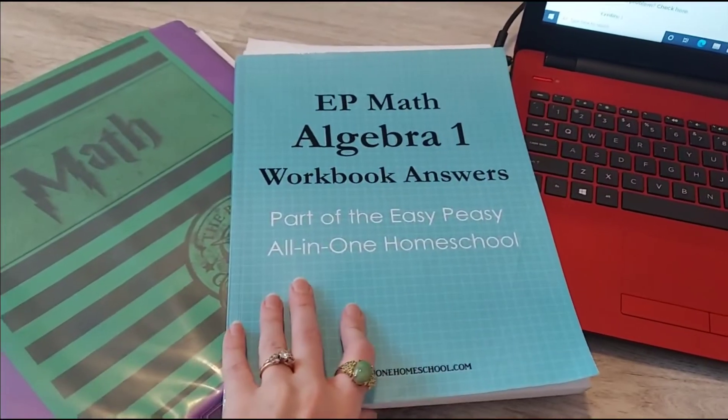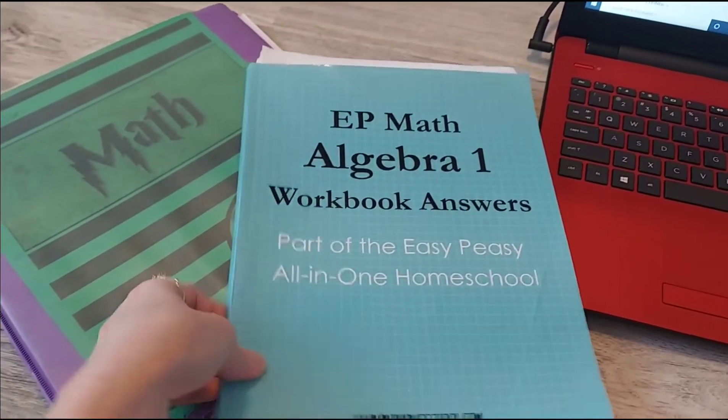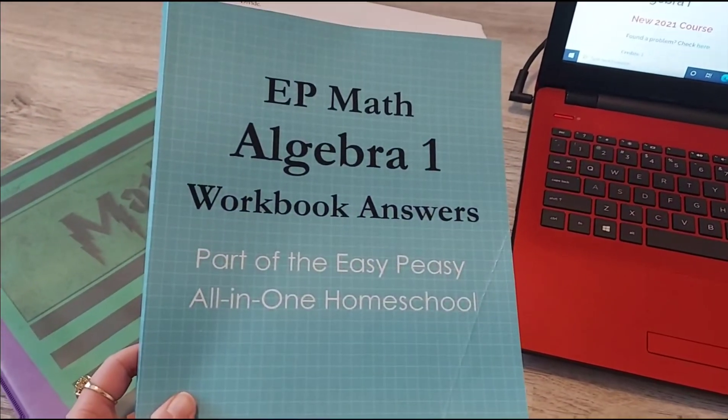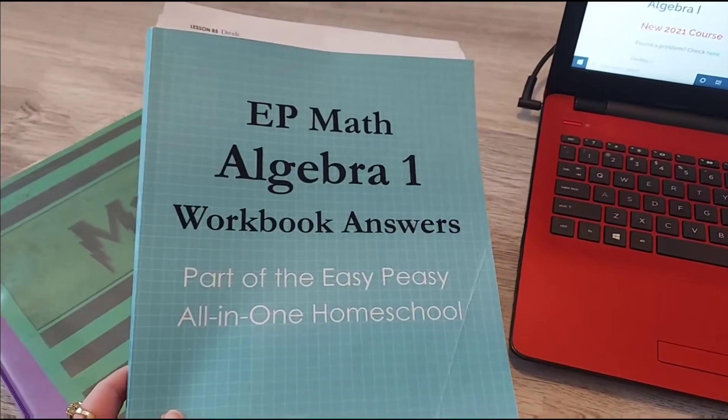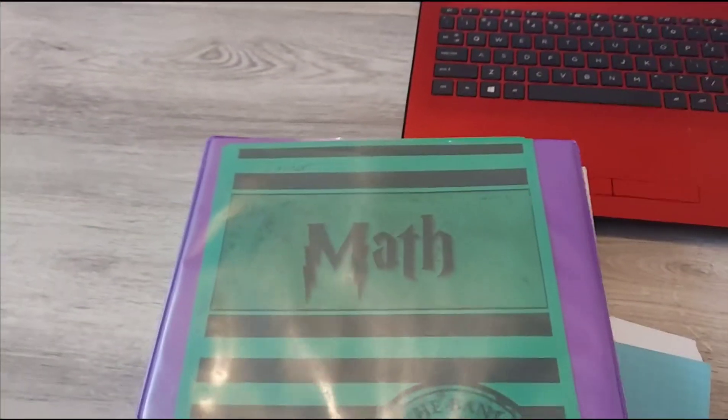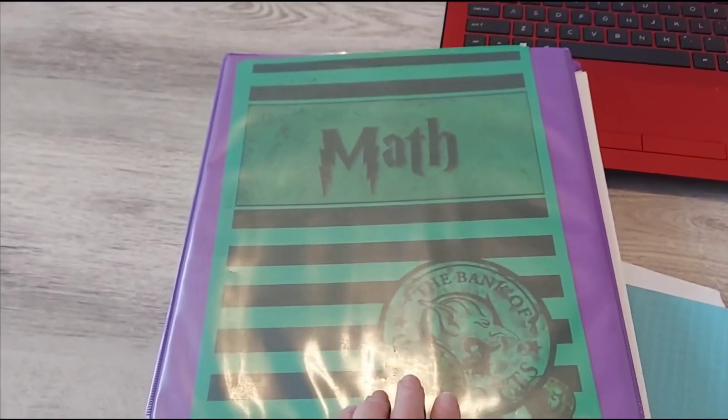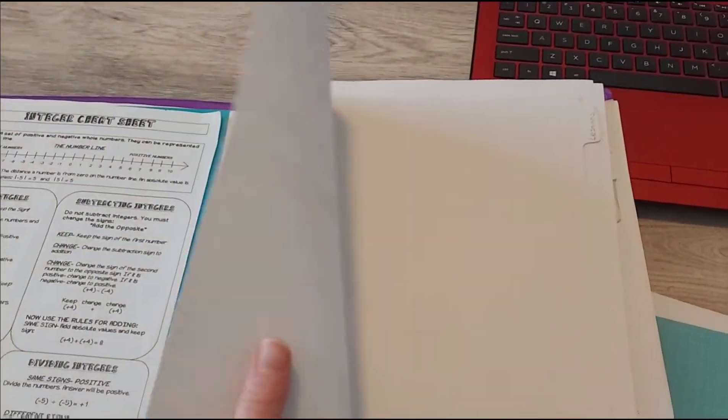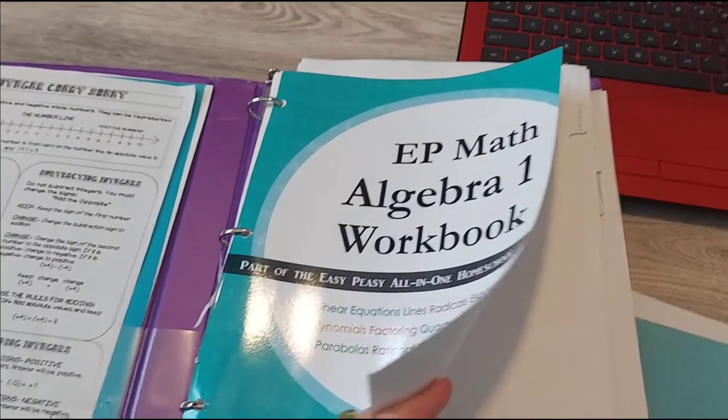When you're doing the offline program there are two books you need. You need this one right here the workbook answers and you also need to order a second workbook and these can be purchased from Amazon and that is the textbook and also the worksheets. They're together. So I've broken mine down. Here's the old cover and I put it in a binder with tabs.